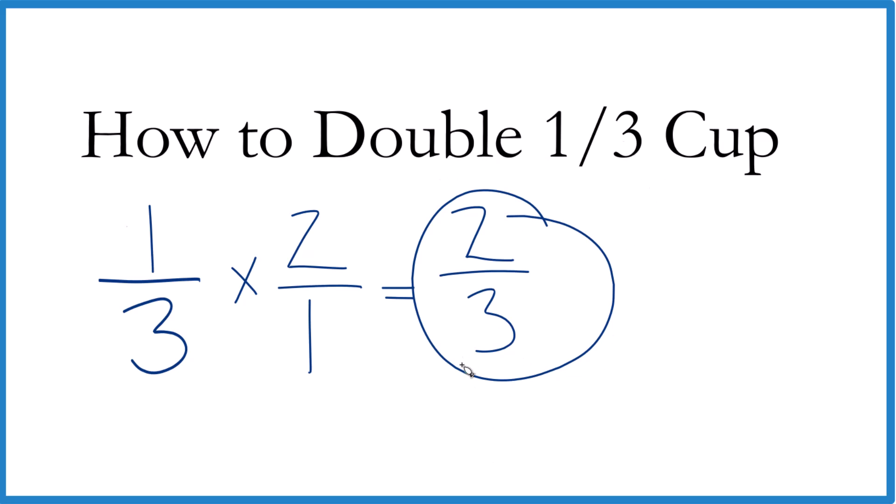There is one other way you could do this. Since we're doubling it, we just have two of these. We could say one-third plus one-third.